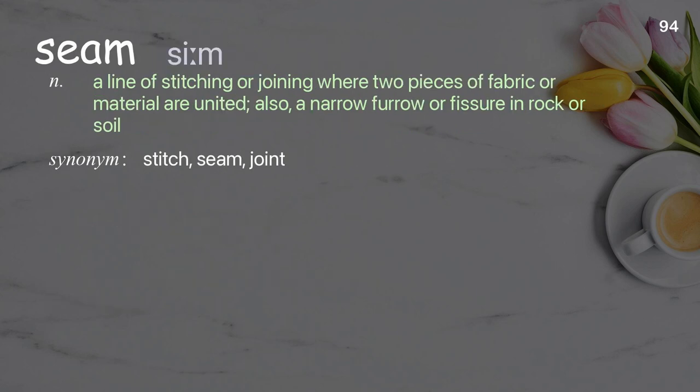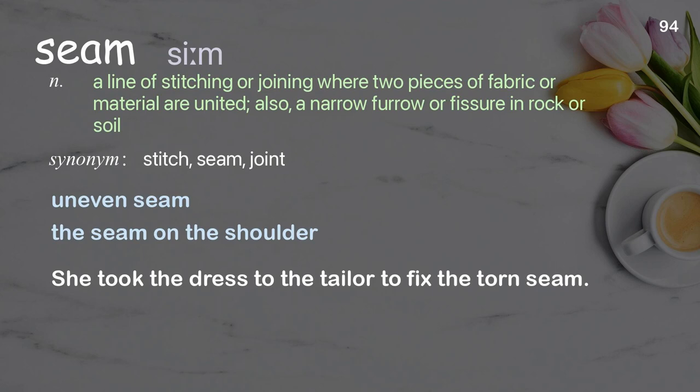Seam: A line of stitching or joining where two pieces of fabric or material are united; also, a narrow furrow or fissure in rock or soil. Examples: Uneven seam. The seam on the shoulder. She took the dress to the tailor to fix the torn seam.